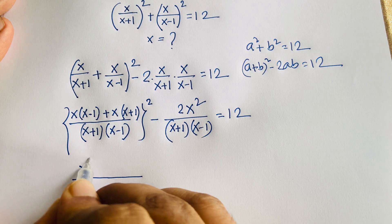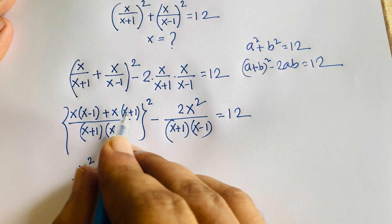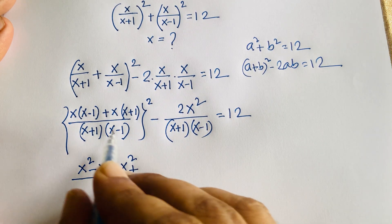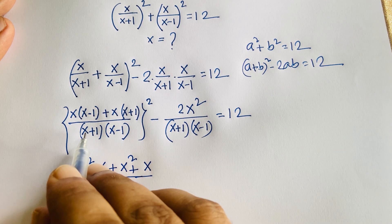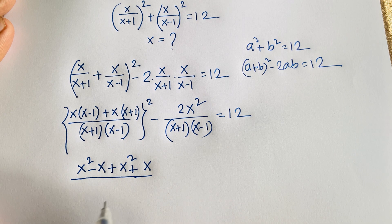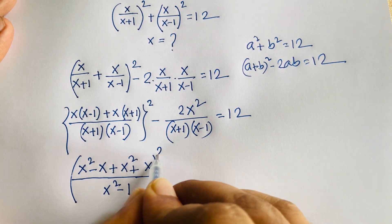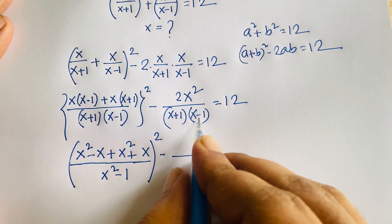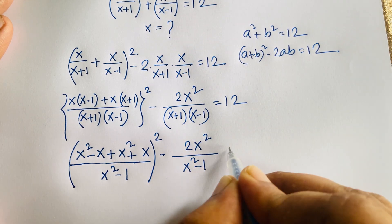Expanding the numerator: x(x-1) = x²-x and x(x+1) = x²+x, so the sum is 2x². Using the difference of squares rule, (x+1)(x-1) = x²-1. So the expression becomes (2x²/(x²-1))² minus 2x²/(x²-1), equal to 12.